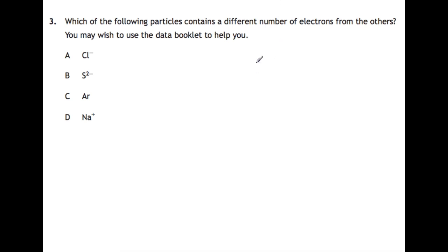Question three: which of the following particles contains a different number of electrons from the others? You may wish to use your data book to help you. When it says that, use your data book. Look for the electron configuration page, which is page six. Chlorine is 2,8,7, with a negative charge we're adding one on so that's 2,8,8. Sulfur is usually 2,8,6, with a two negative charge we're adding on two, so that's 2,8,8. Argon is just 2,8,8 as it is. Sodium is usually 2,8,1, and the positive charge means we've lost one, so that is 2,8. This means our answer here is D, sodium.